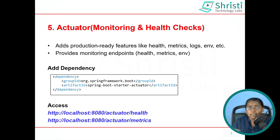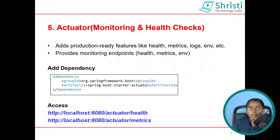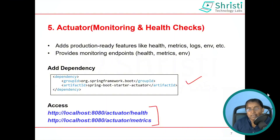The next feature is Actuator. Actuator is used for monitoring your application and provides health checks. It has production-ready features like health, metrics, logs, ENV, and more, along with corresponding monitoring endpoints. To enable health checks and monitoring, just add Actuator as a dependency. The REST endpoints available are /actuator/health, /actuator/metrics, and /actuator/info, among others. I have also created a video on how to add Actuator and perform monitoring and health checks — you can go and watch that.